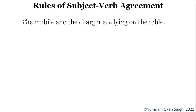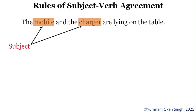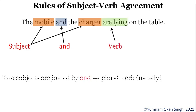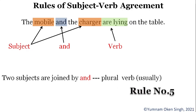Let's look at: 'The mobile and the charger are lying on the table.' Here we have two subjects — mobile and charger — combined by the conjunction 'and,' so the subject is plural and takes a plural verb. Whenever two nouns or pronouns are joined by the conjunction 'and,' it takes a plural verb. This is Rule Number Five.